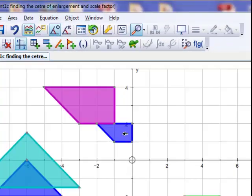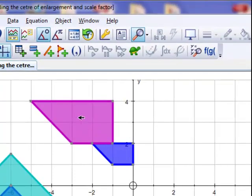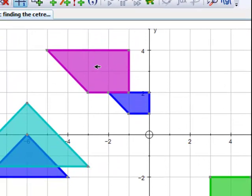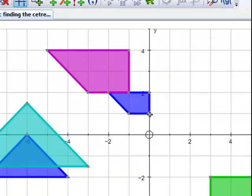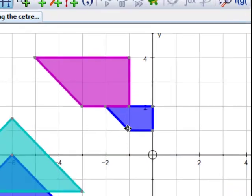We'll start with this blue one here, which has been enlarged to give this purple color, and we'd like to know where the center of rotation is and what the scale factor of enlargement is. As you can see, that length there is one unit and that's two, so we should think the scale factor is two.